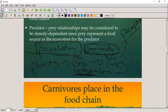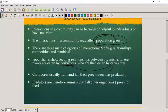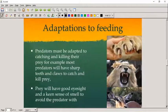The arrow always points to whatever organism is getting the energy. Predators are animals that kill other organisms or prey for food.